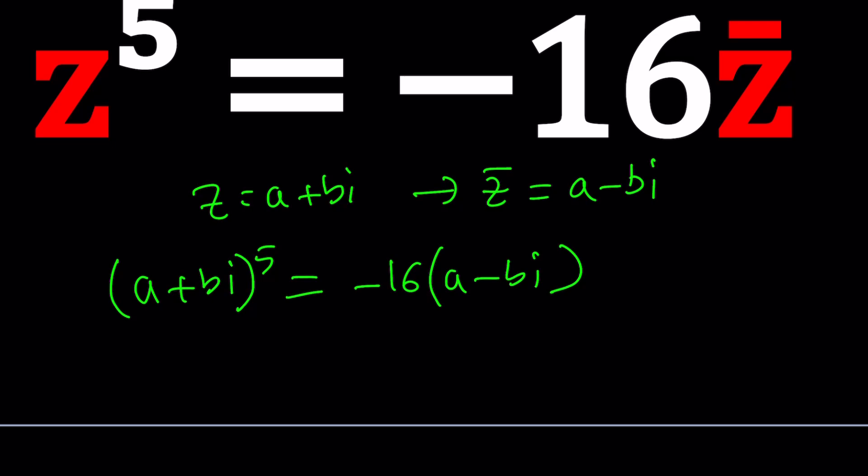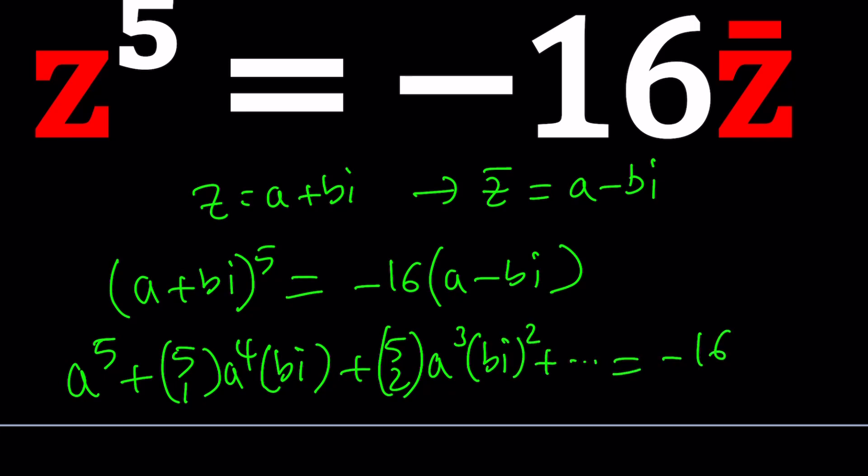Now this turns into something not so great because on the left hand side you're going to have six terms and something like A to the fifth power plus 5 choose 1, A to the fourth multiply by B I and then you're going to have 5 choose 2 which is the combinatorial coefficients, A cubed times B I quantity squared, so on and so forth. So you're going to have a lot of terms and then you need to set it equal to this and guess what? From here you should be able to find A and B, right? Well, good luck with that.